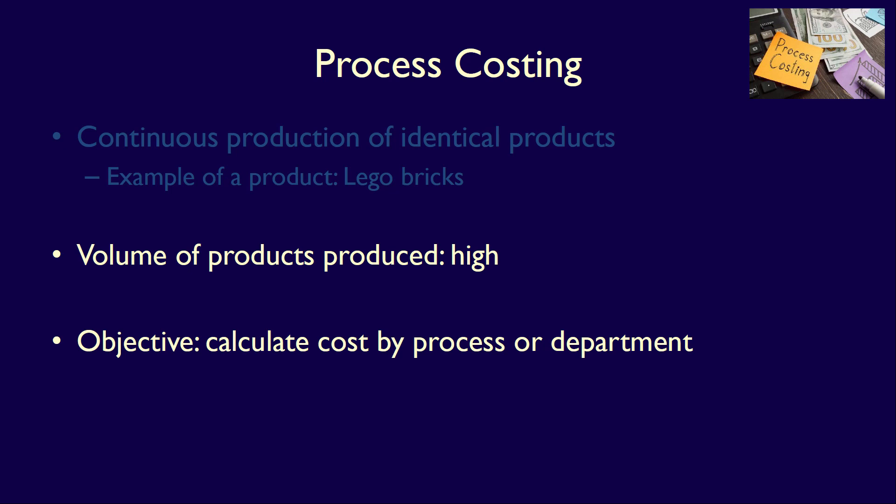You can see that process costing is used when the volume of products being produced is very high. The objective of the process costing system is to accumulate costs either by process or by department. We can still calculate the cost of each unit by dividing the total processing costs by the total units produced.